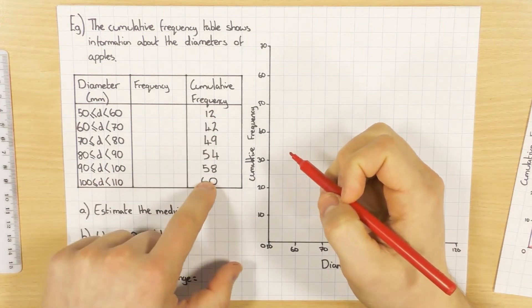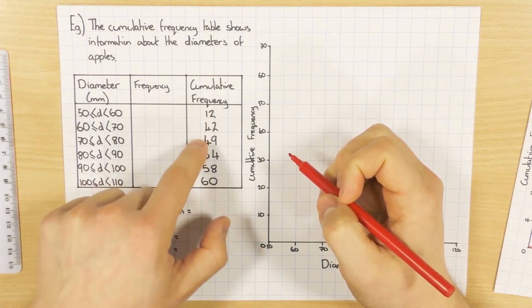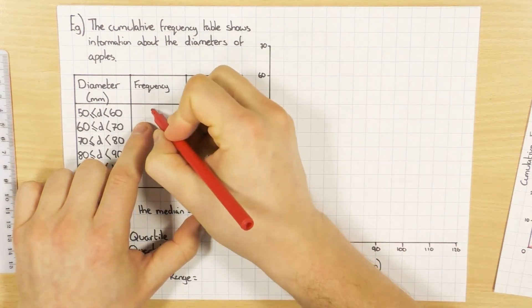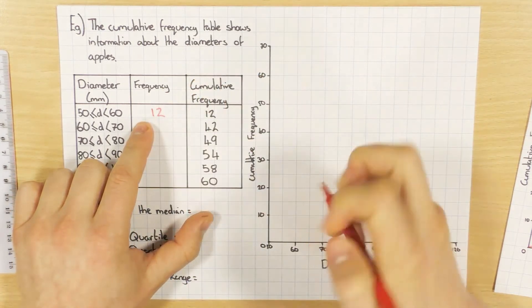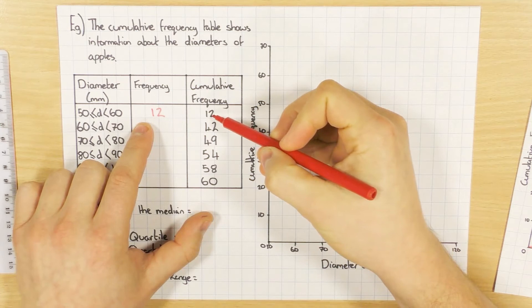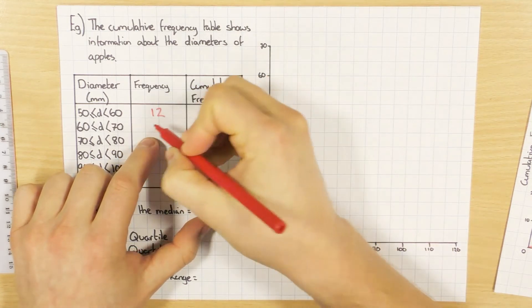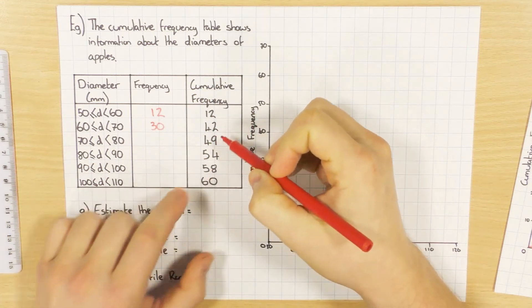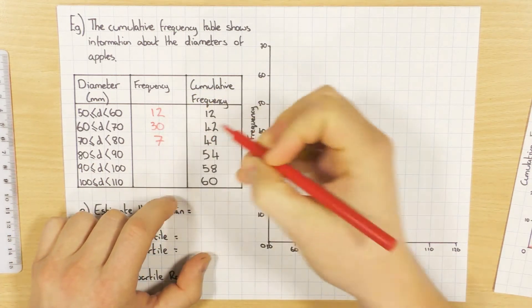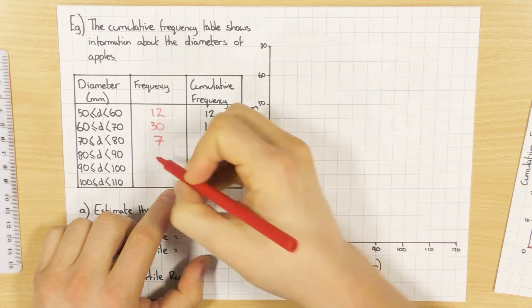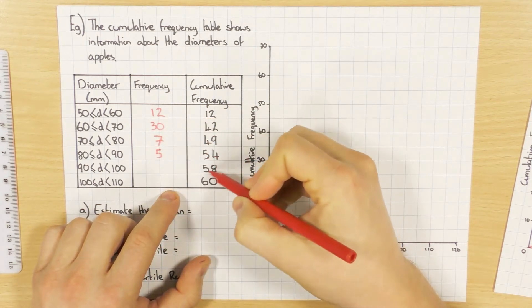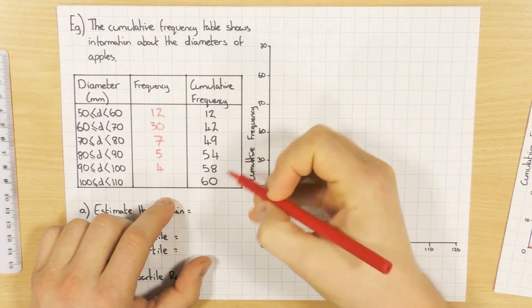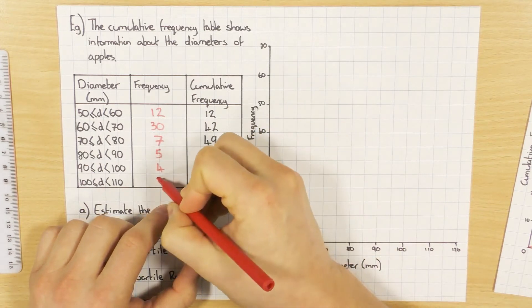So as this is a running total, all I'm going to do is work out the difference between each one. So the first one is obviously going to be 12, and then what's the difference between 12 and 42? Well, that must be 30. And then 42 and 49, the difference there is 7. 49 and 54 is 5. 54 and 58, difference is 4. And then finally 58 and 60 is 2.